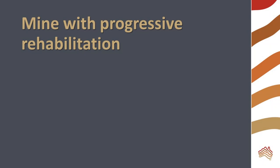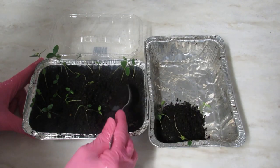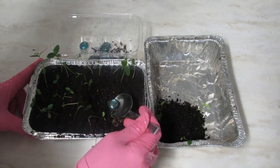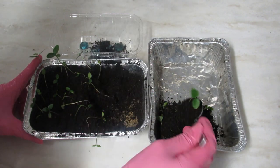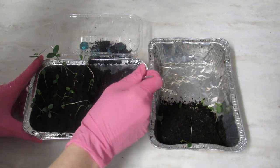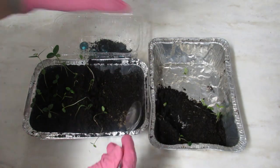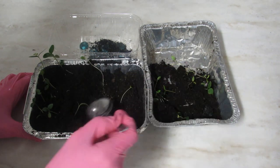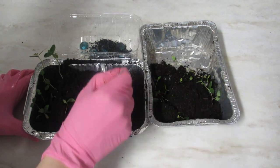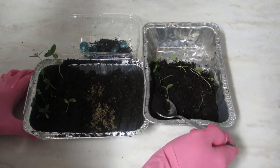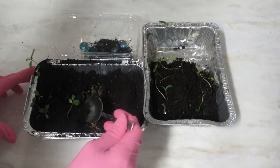We are going to mine this site with progressive rehabilitation. This method is often used in NSW coal mines. Your spoon is your mining equipment and must be used for all excavation. Clear areas for mining and reserve the topsoil off to the side. Collect your ore for processing at another spot. When you have finished mining part of the pan, rehabilitate it by covering the sand with reserve topsoil.